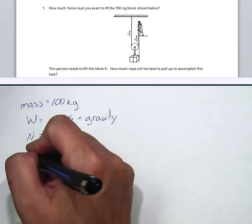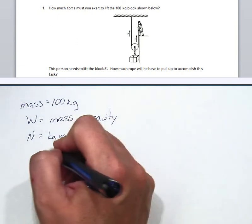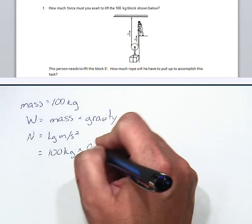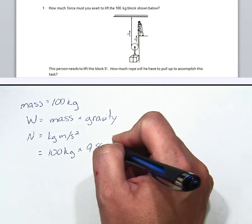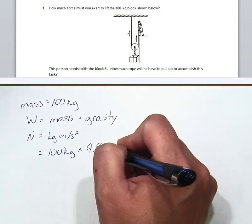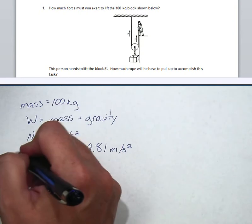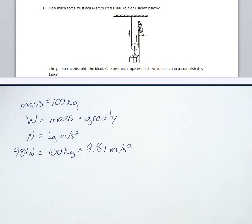So that means that our weight is 100 kilograms times the acceleration due to gravity, which is 9.81 meters per second squared. Multiply that together and it's 981 newtons.